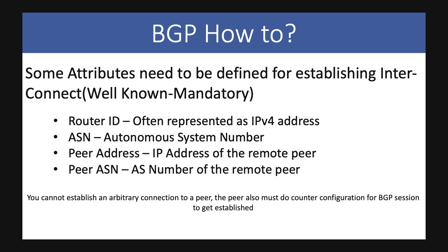To establish a BGP connection there are certain required attributes: a Router ID, usually represented as an IPv4 address; an ASN — Autonomous System Number — which you get from your regional registrar such as APNIC in Asia or RIPE in Europe; the peer address of the other party; and their ASN. Unlike OSPF where all routers are under your control, with BGP you need the other party to configure BGP on their side as well — without that, the BGP session won't be established.